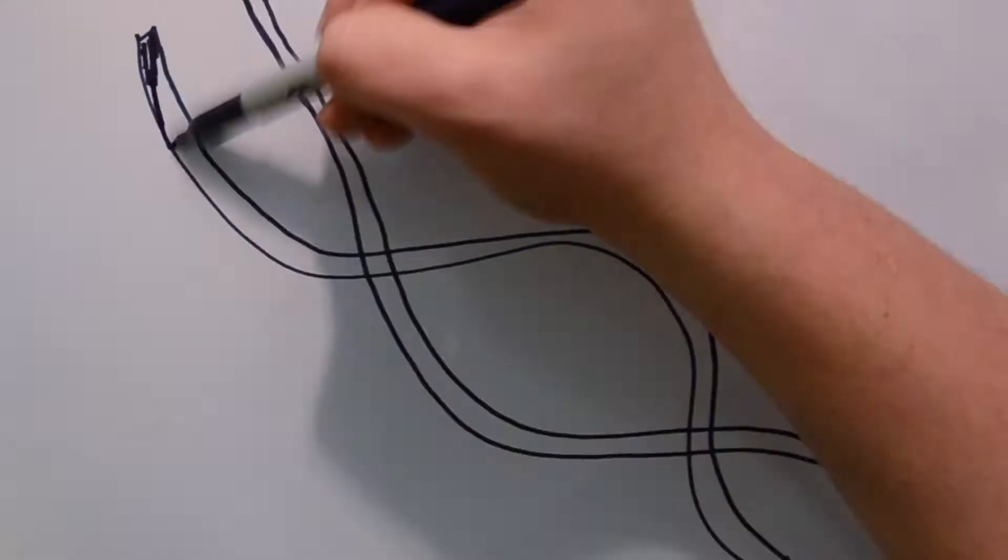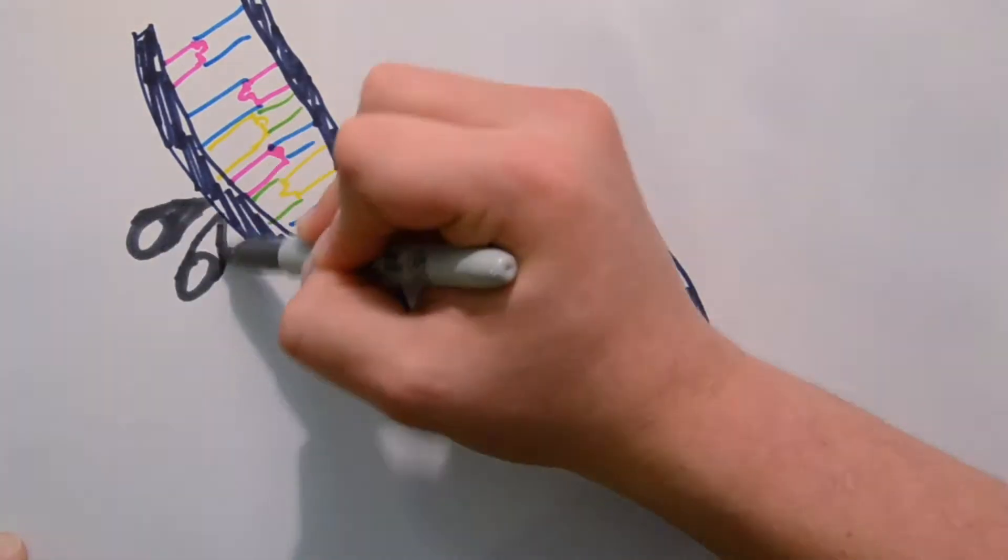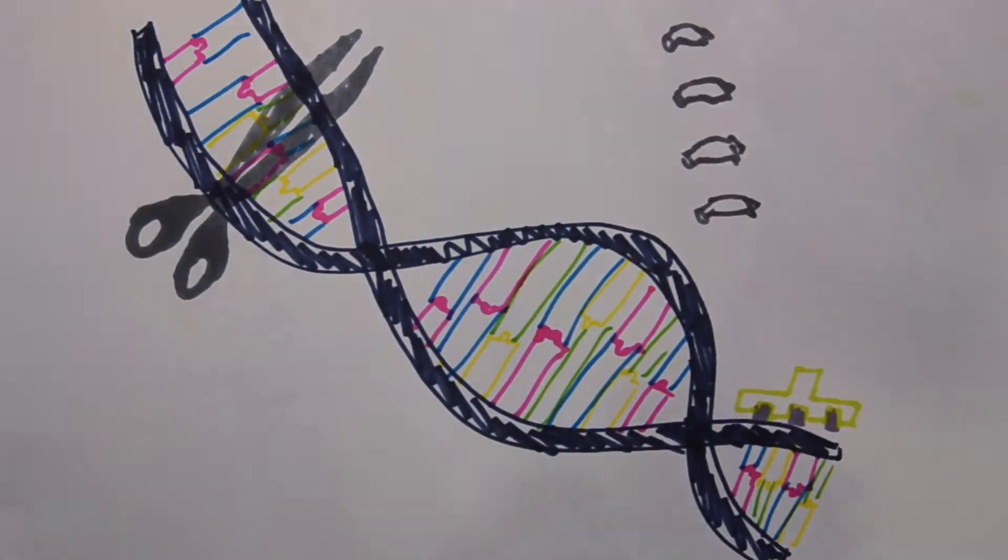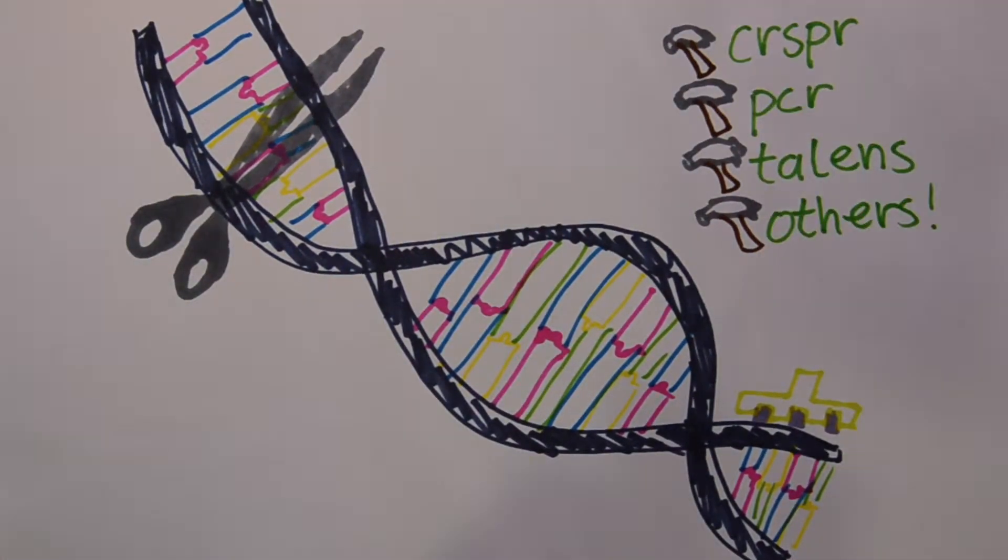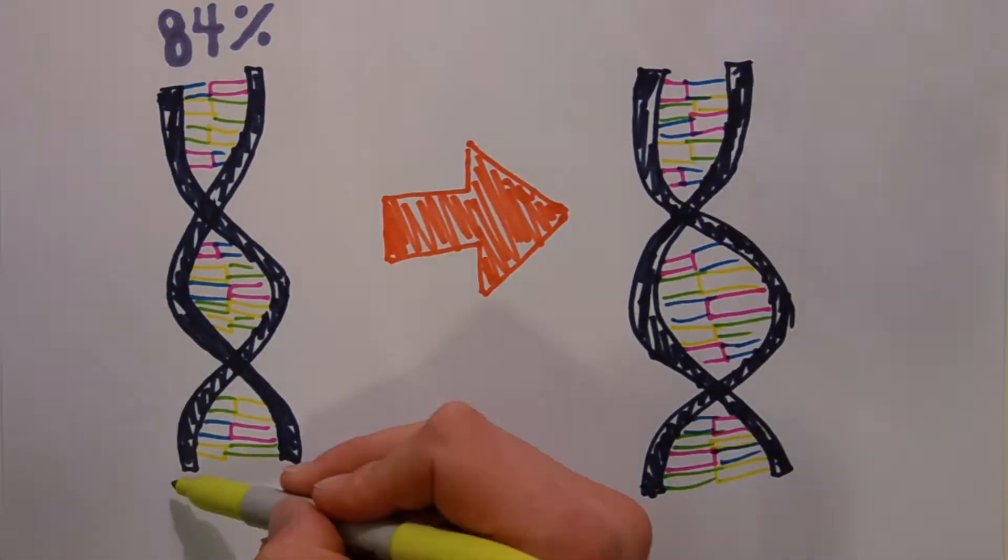The zebrafish is a powerful tool for pathological research because its genome has been sequenced and we have many genetic tools by which to manipulate it to model disease. Moreover, 84% of zebrafish genes can directly represent human genetic diseases.